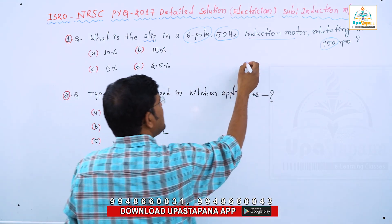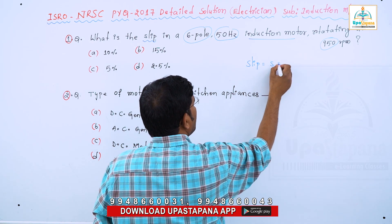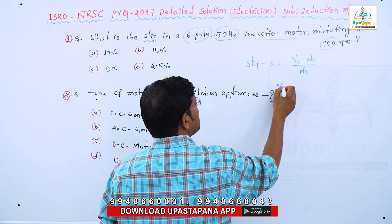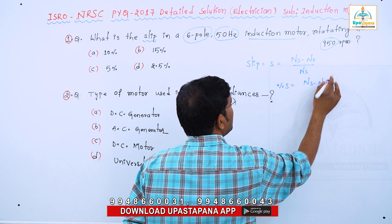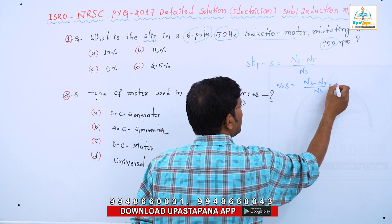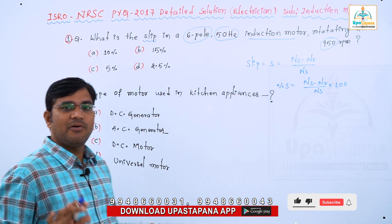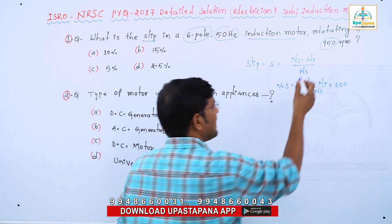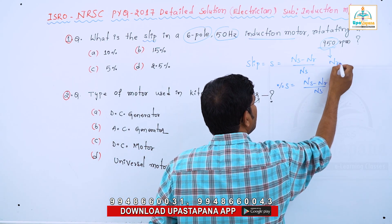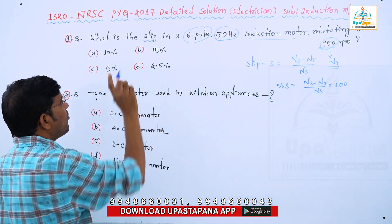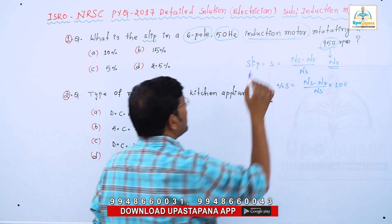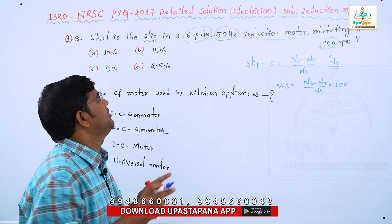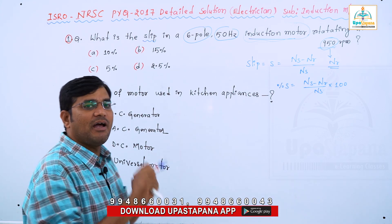Let's go to the slip. Slip formula: slip equals Ns minus Nr divided by Ns. Now we are looking at the percentage slip — if we multiply the slip value by 100, we get percentage slip. The speed observed in the problem is always taken as Nr, the rotor speed.